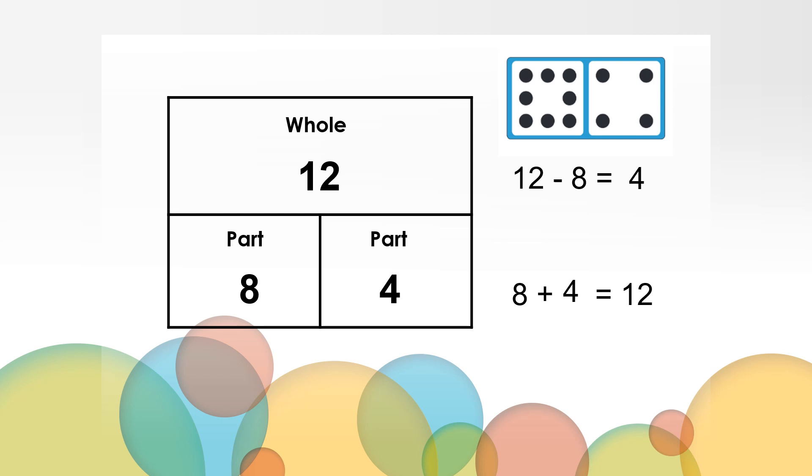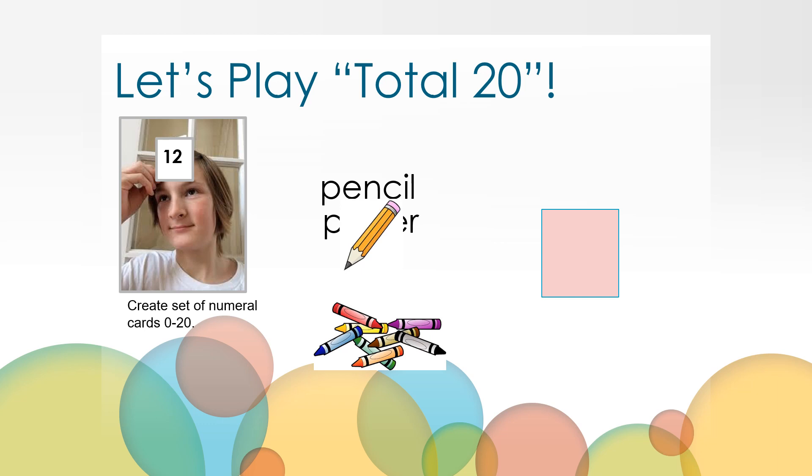Do you think you could write the missing facts from this fact family? Take a moment to think about those and write them on your paper. Are you ready to check your work? That's right, the missing equations were 12 minus 4 equals 8, and 4 plus 8 equals 12.